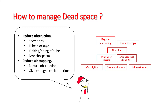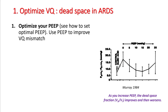To reduce air trapping, reduce obstruction and give enough exhalation time. To optimize VQ, optimize your PEEP. One thing about PEEP is that you usually use it for treating hypoxemia — while increasing PEEP to recruit and improve hypoxemia, you can sometimes start running into a problem of over-distension, which can cause increased CO2.